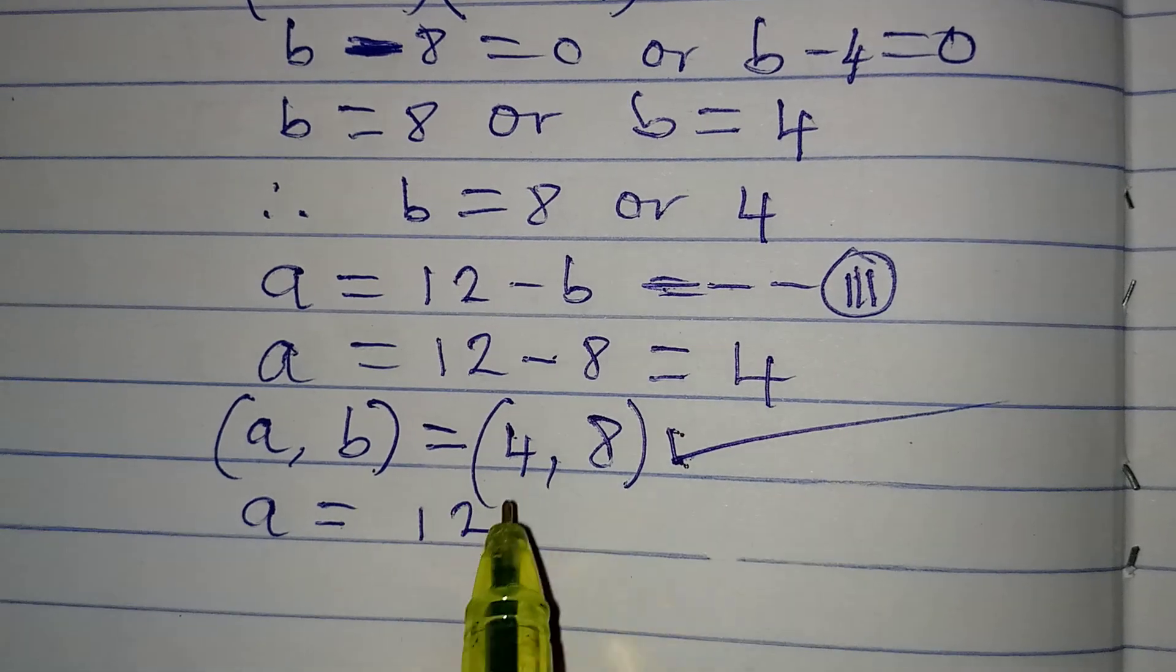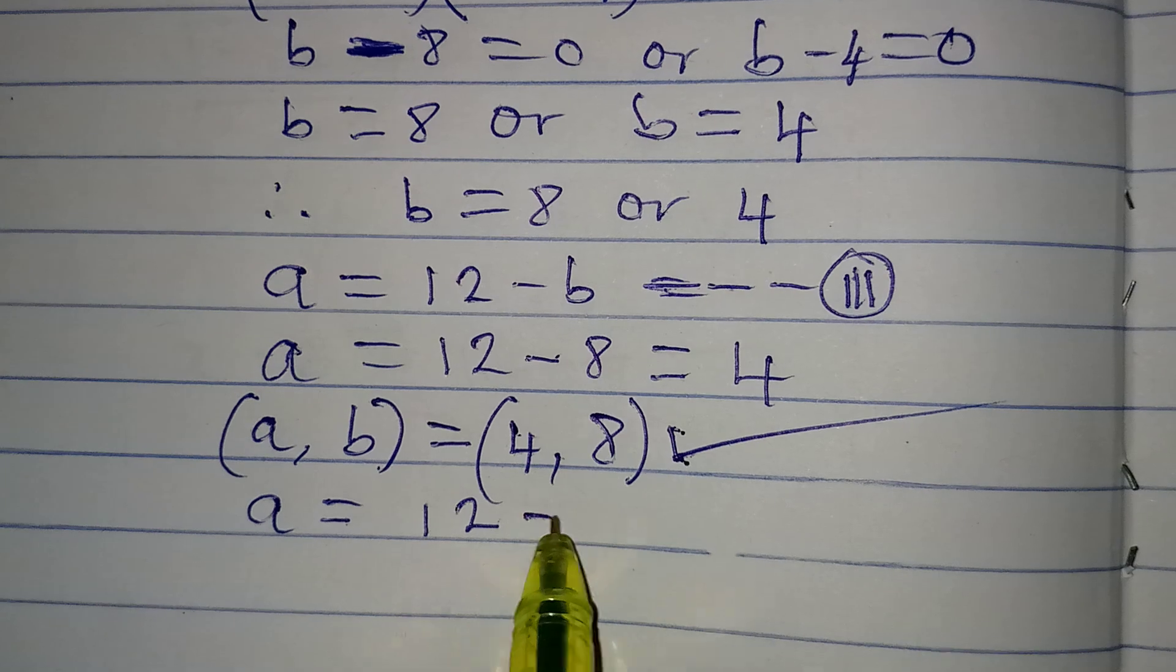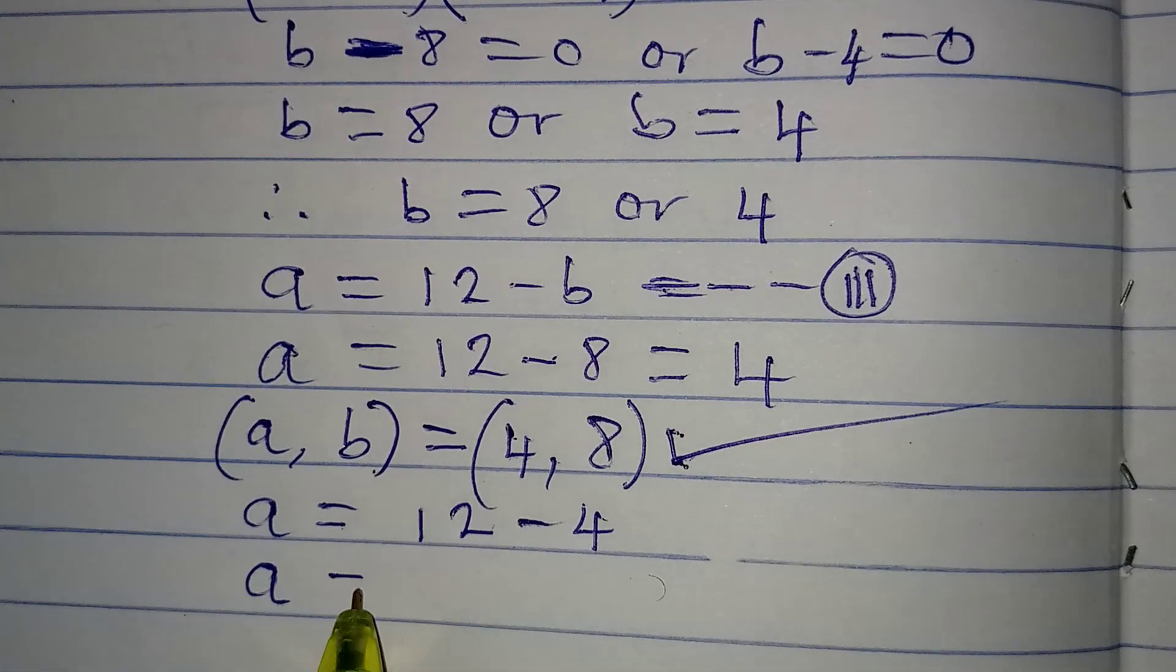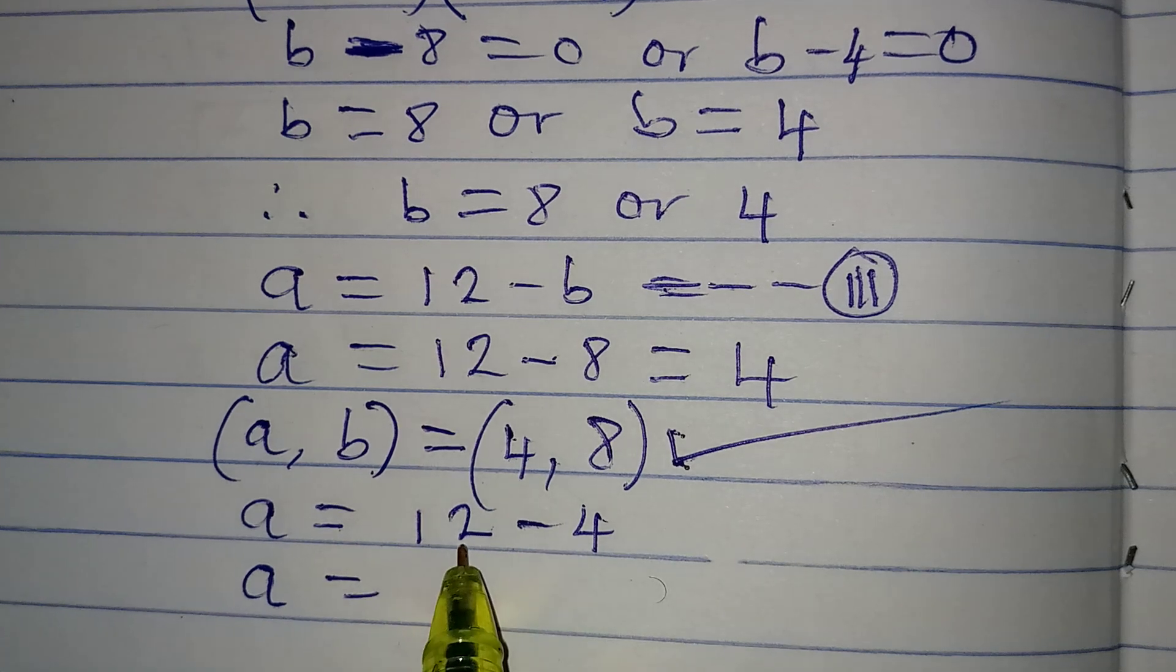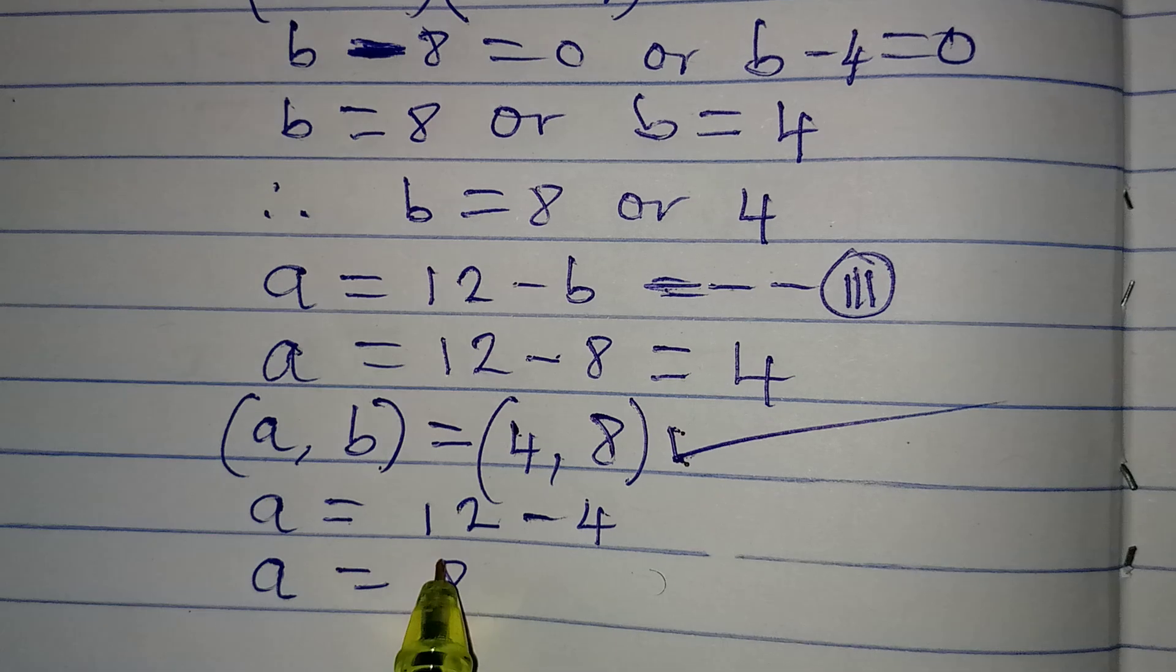This means that A at this point is going to be equal to, we have 12 here. Then in place of B now, I'm writing 4. That means we have minus 4. And this means that A is equal to 12 minus 4, and that is 8.